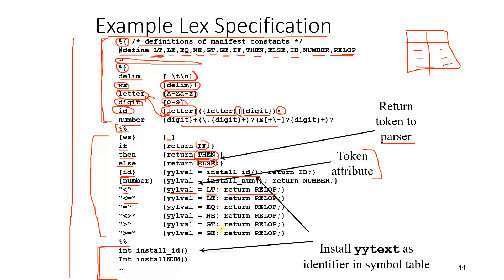This is in the third part. After separating by this percentage percentage sign, we get to know that this is user-defined auxiliary procedures part. So we have the install ID, install num, and a few more if there are any. So this is the whole explanation of a simple lex specification program.